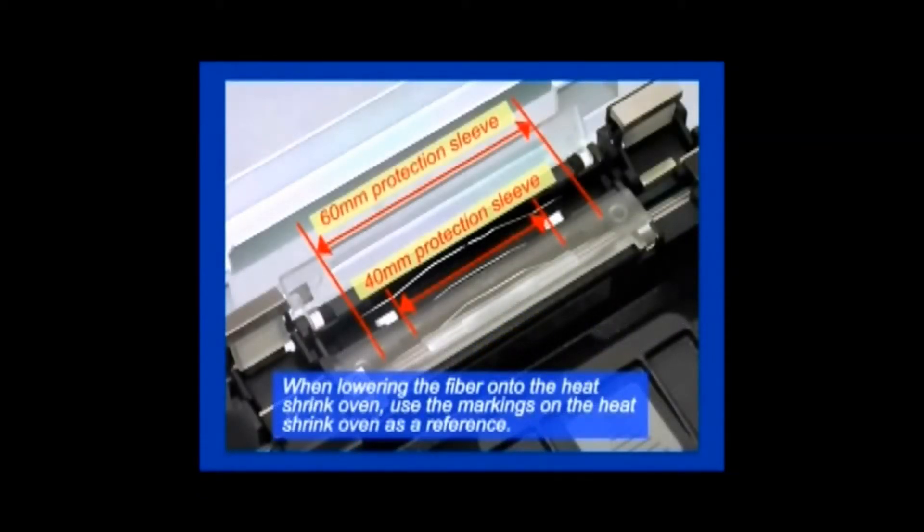When lowering the fiber onto the heat shrink oven, the markings on the heat shrink oven are used as a reference to center the splice.